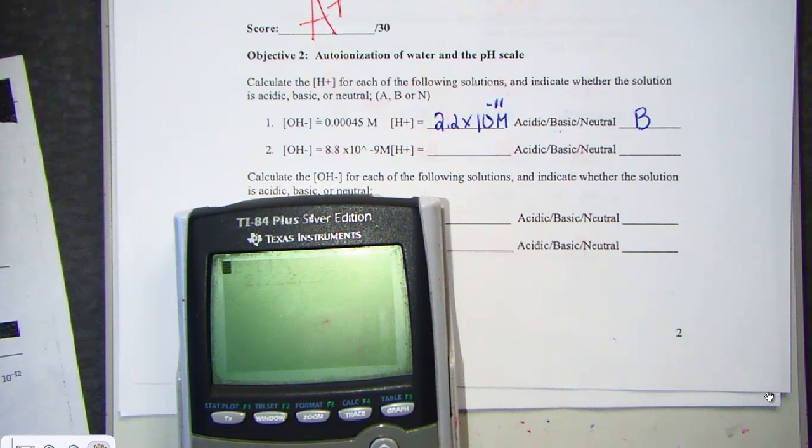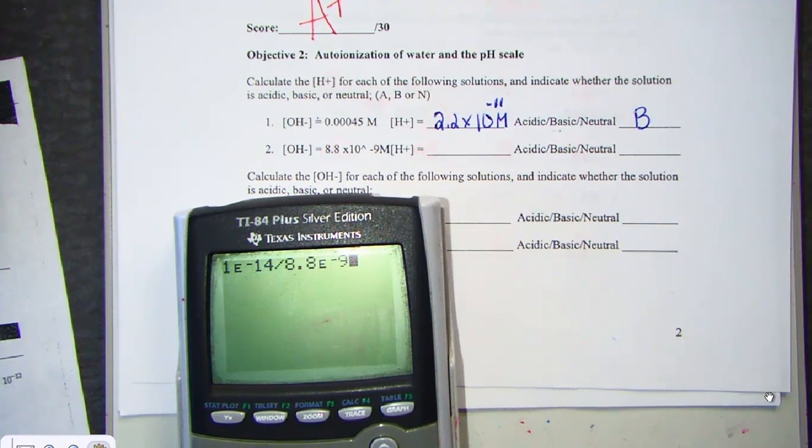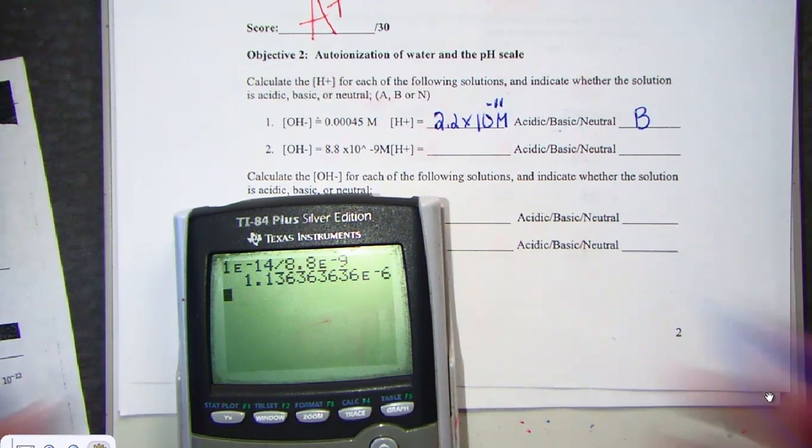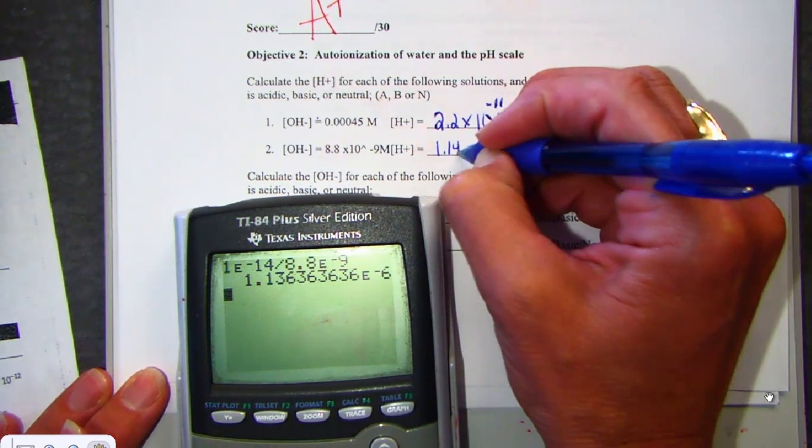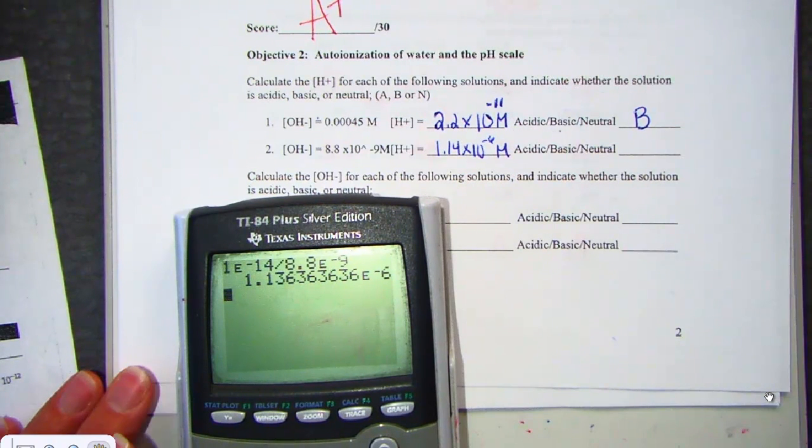Casey, let's hit for the second one together. 1e negative 14th divided by 8.8 times 10 to the negative 9th power. What did you find? Awesome, it's a match. 1.14 times 10 to the negative 6th, and that has a unit after it - big M for molarity.